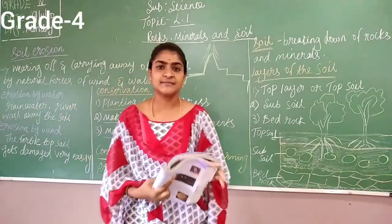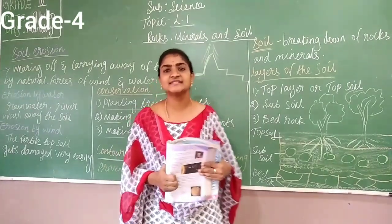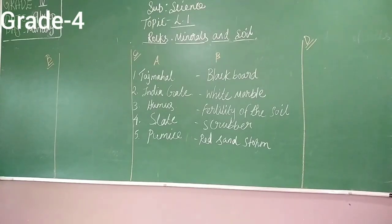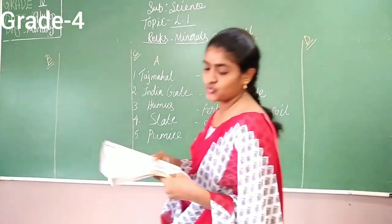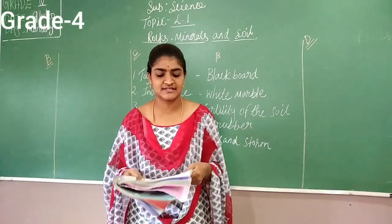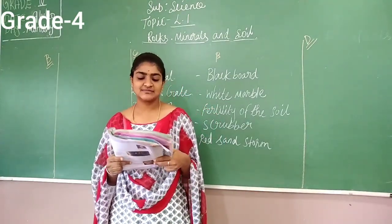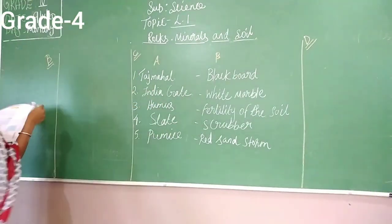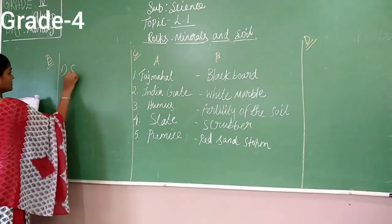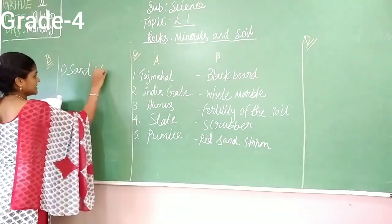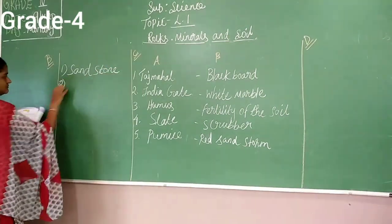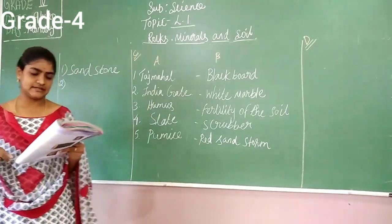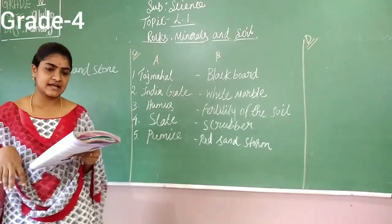Now we will move on to our textbook exercise — everyone take out page number 156. We will do the fill-in-the-blanks section. First question: the Red Fort is made up of — options are marble and sandstone. The answer is sandstone. Put a tick mark next to sandstone and write it in the blank.